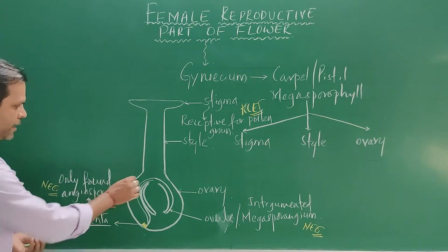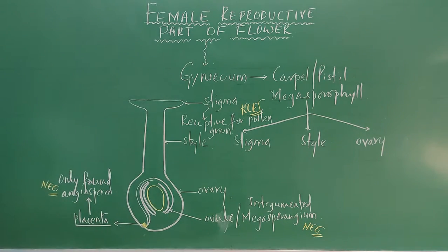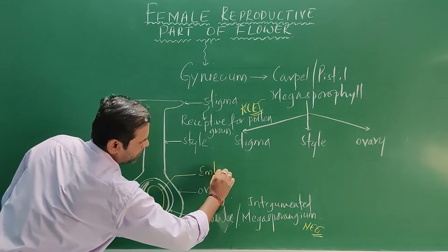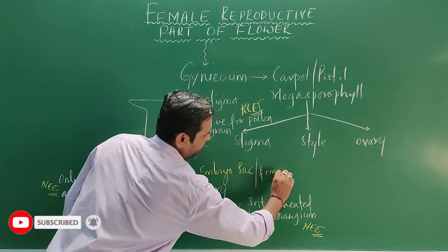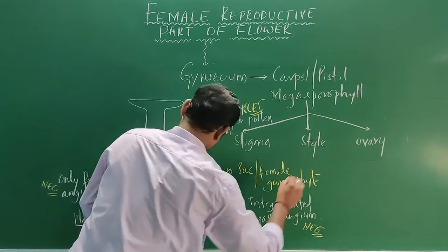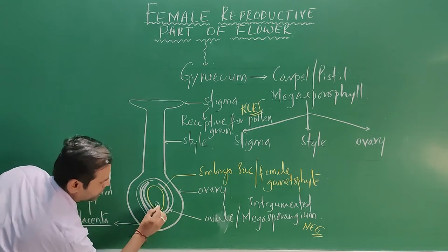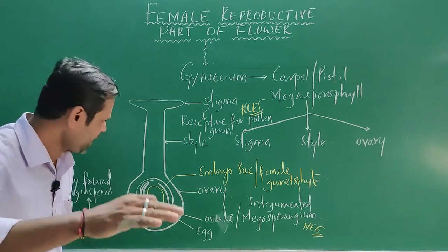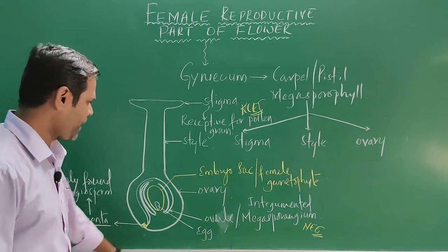Inside the ovule, the embryo sac is present. That is the female gametophyte. And inside the embryo sac, the egg is present — that is the female gamete. So you can say: inside the ovule, the embryo sac is present, and inside the embryo sac, the egg is present.